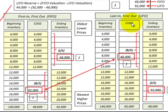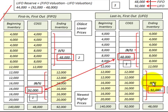Now looking at LIFO inventory, we use our newest, higher-cost inventory first. Our ending inventory would therefore be our older, lower-priced inventory. In this example, we used $92,000 worth of inventory as our cost of goods sold on the income statement. So our ending inventory would be the $140,000 of inventory on hand less the $92,000 used, leaving an ending inventory of $48,000.